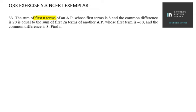First n terms of an AP whose first term is 8, common difference is 20, is equal to the sum of first 2n terms of another AP whose first term is minus 30 and common difference is 8. Find n.